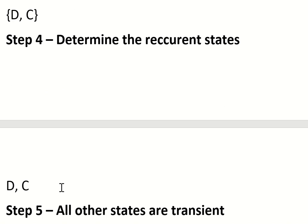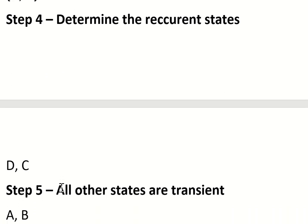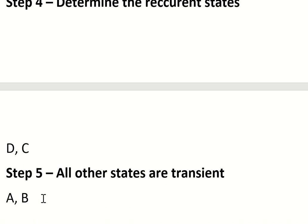The last step is to determine that all other states are transient. This shows A and B are transient.